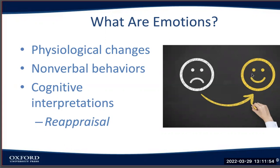Nonverbal behavior can include when you blush because you're embarrassed, or maybe you sweat because you feel nervous. Maybe your posture or your gesture will change. Maybe you start to speak really quickly when you feel anxious. Maybe the tone of your voice changes — you get really loud or really quiet depending on how you're feeling. These are all different nonverbal behaviors that can occur based on your emotional state.